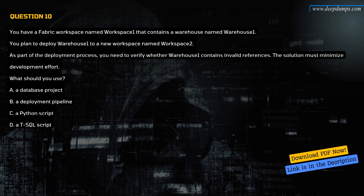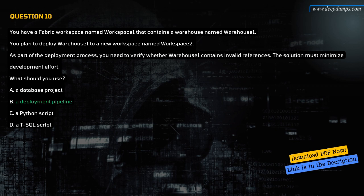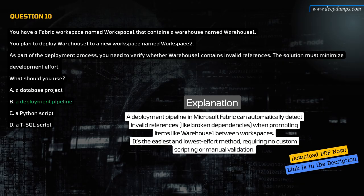Question 10. You have a Fabric workspace named Workspace-1 that contains a warehouse named Warehouse-1. You plan to deploy Warehouse-1 to a new workspace named Workspace-2. As part of the deployment process, you need to verify whether Warehouse-1 contains invalid references. The solution must minimize development effort. What should you use? A. A database project. B. A deployment pipeline. C. A Python script. D. A T-SQL script. The correct answer is B. A deployment pipeline. A deployment pipeline in Microsoft Fabric can automatically detect invalid references like broken dependencies when promoting items between workspaces, requiring no custom scripting or manual validation.